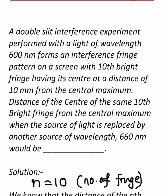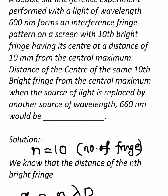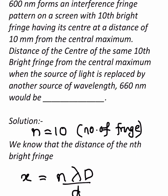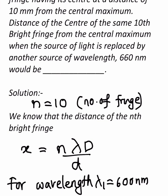A double slit interference experiment performed with a light of wavelength 600 nanometers forms an interference fringe pattern on a screen with the 10th bright fringe having its center at a distance of 10 mm from the central maximum. The distance of the center of the same 10th bright fringe from the central maximum when the source of light is replaced by another source of wavelength 660 nanometers would be dash.